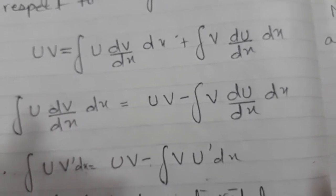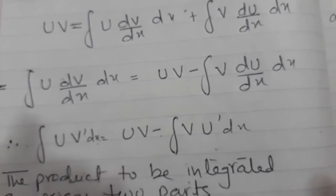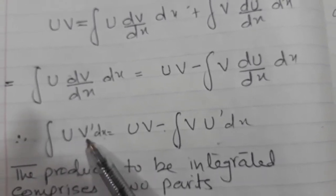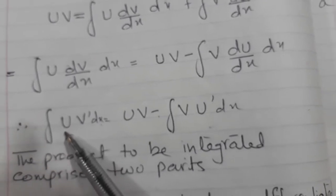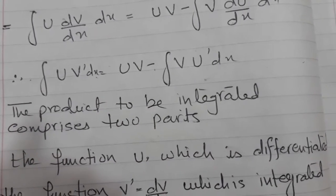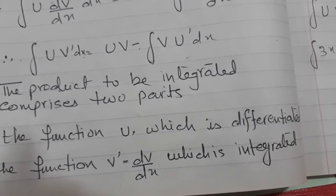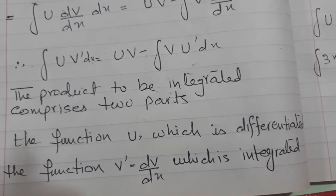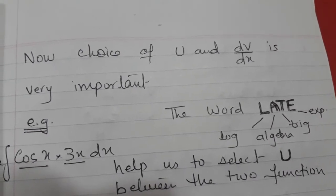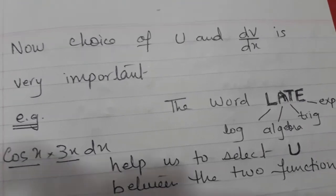So now you see the formula: ∫u·v'dx = uv − ∫v·u'dx. It means when you have to integrate two functions which are multiplying, you will take one function as u — the one which is differentiated — and the other as the integrated function v'. The two functions in the integration will be taken as u and v'. The point is how we will choose which one is u and which one is the integrated function. This choice is extremely important; otherwise, you keep solving and never get the answer.